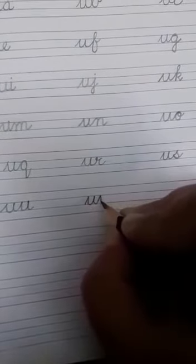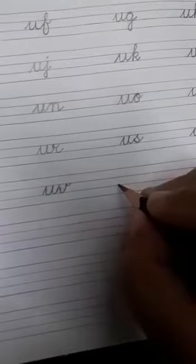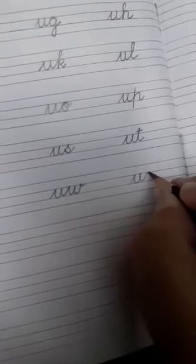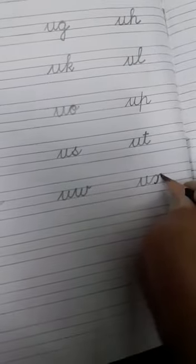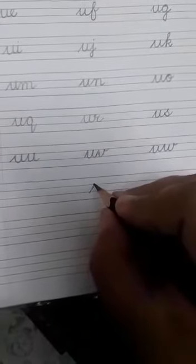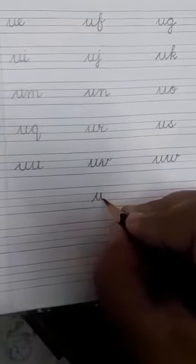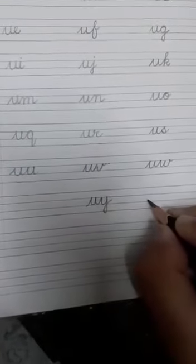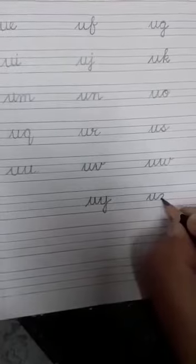What comes after U? V. So U-V, U-W, U-X. After X it comes Y. So U-Y. Now U-Z.